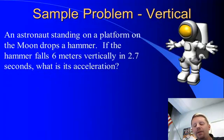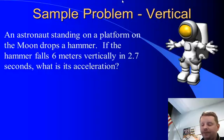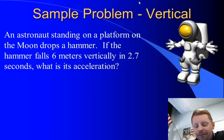Let's try another one, but now let's look in the vertical direction. Here we have an astronaut standing on a platform on the moon, and he drops a hammer. If the hammer falls 6 meters vertically in 2.7 seconds, what is its acceleration?